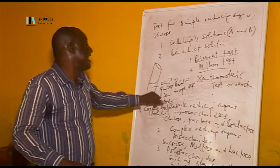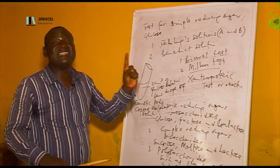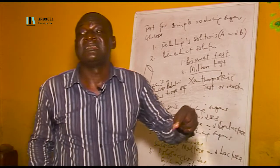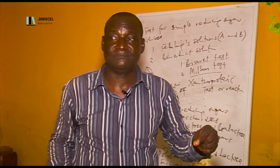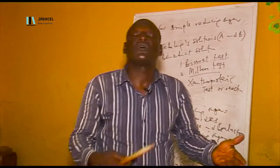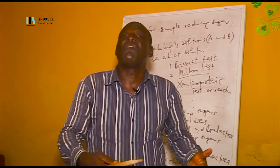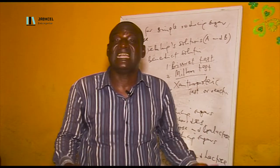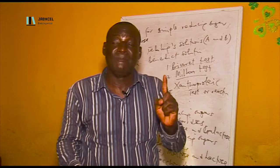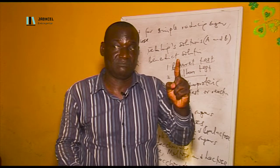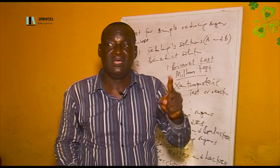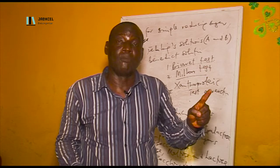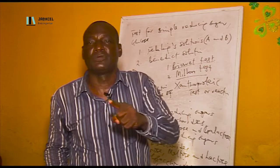For Millon test, there is only one reagent: Millon reagent, named after the man who developed the test. Get a colloidal solution of protein — which can be albumen or meat extract — and add Millon reagent. A deep red coloration is formed. Please take note: deep red coloration under Millon test; under Biuret test, violet coloration for protein and pink coloration for peptone.